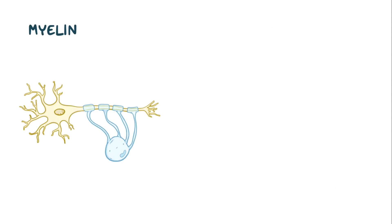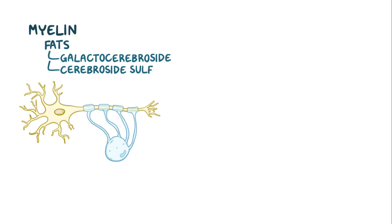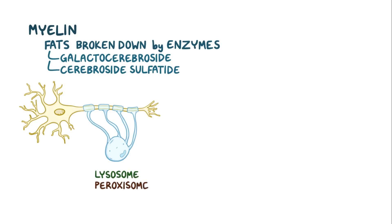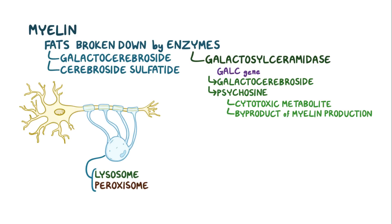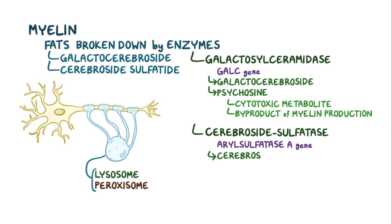Myelin is composed of certain fats, and the primary fat is called galactocerebroside. Galactocerebroside is also used to make another fat found in myelin called cerebroside sulfatide. Over time, these fats are broken down by enzymes found within the lysosomes and peroxisomes of the glial cells. One enzyme found in the lysosome is galactocylceramidase, which is encoded by the GALC gene. Galactocylceramidase helps break down galactocerebroside, as well as a cytotoxic metabolite called psychosine, which is a byproduct of myelin production. Another enzyme in the lysosome is cerebroside sulfatase, which is encoded by the aryl sulfatase A gene and helps break down cerebroside sulfatide.